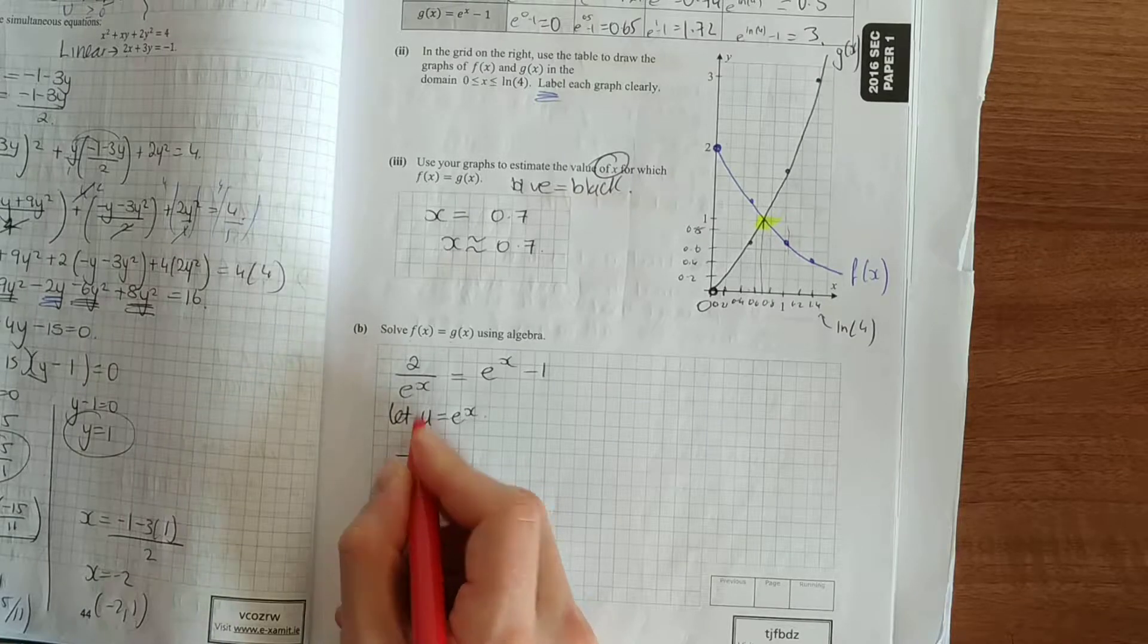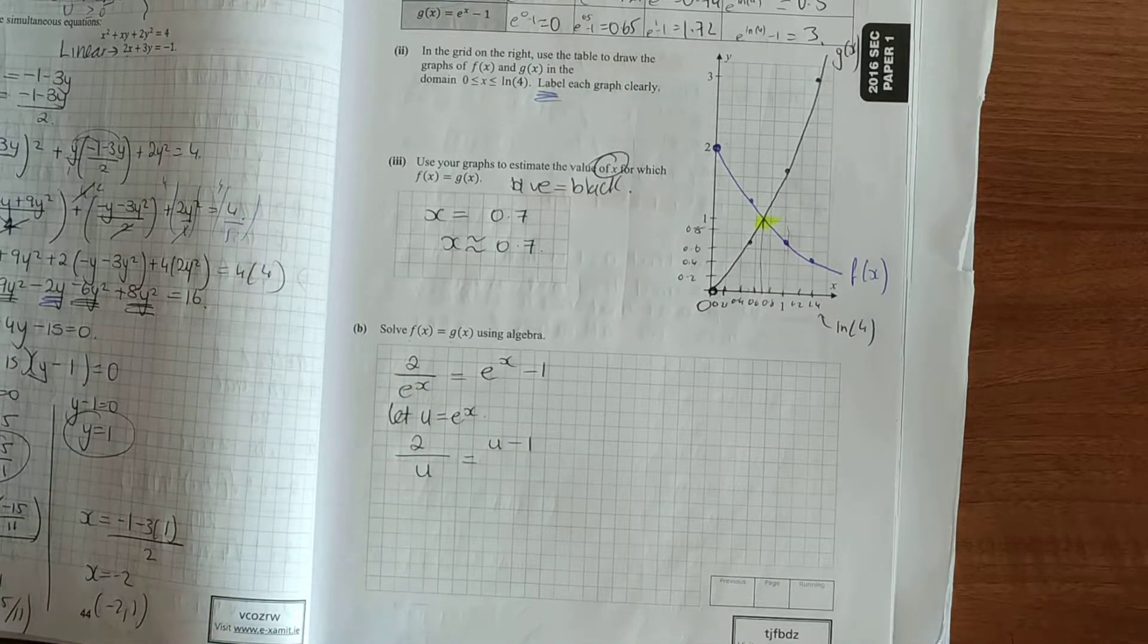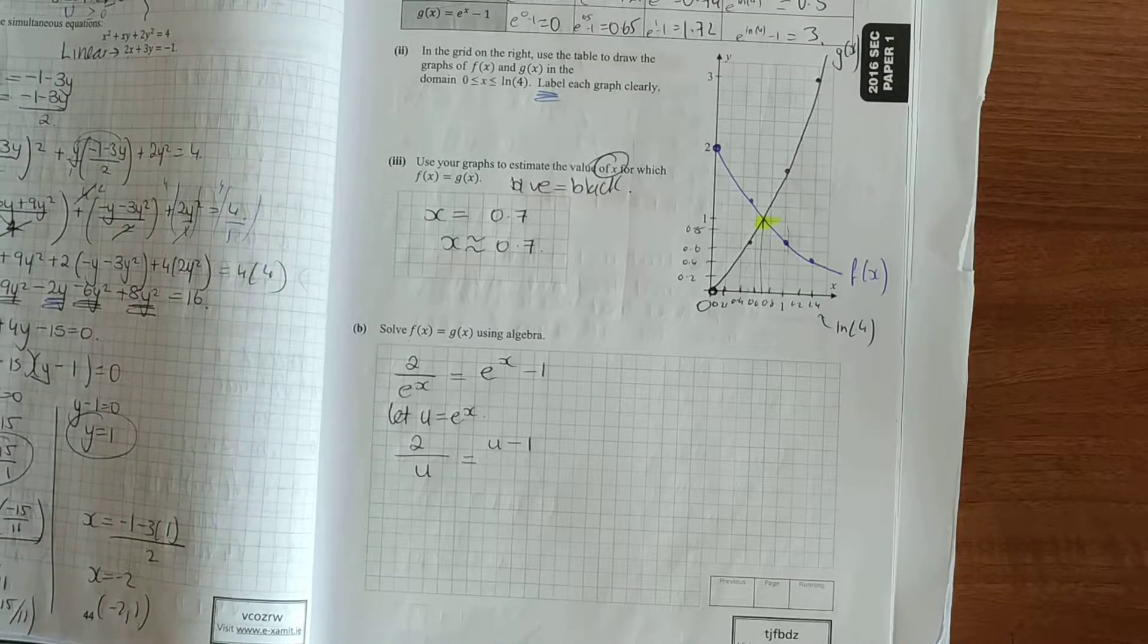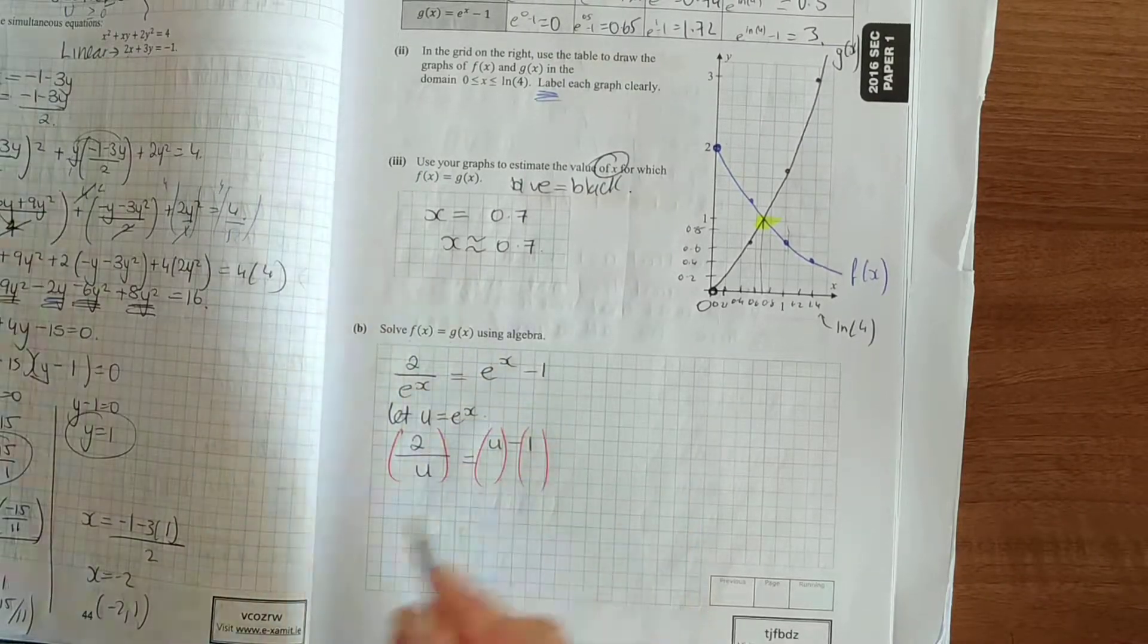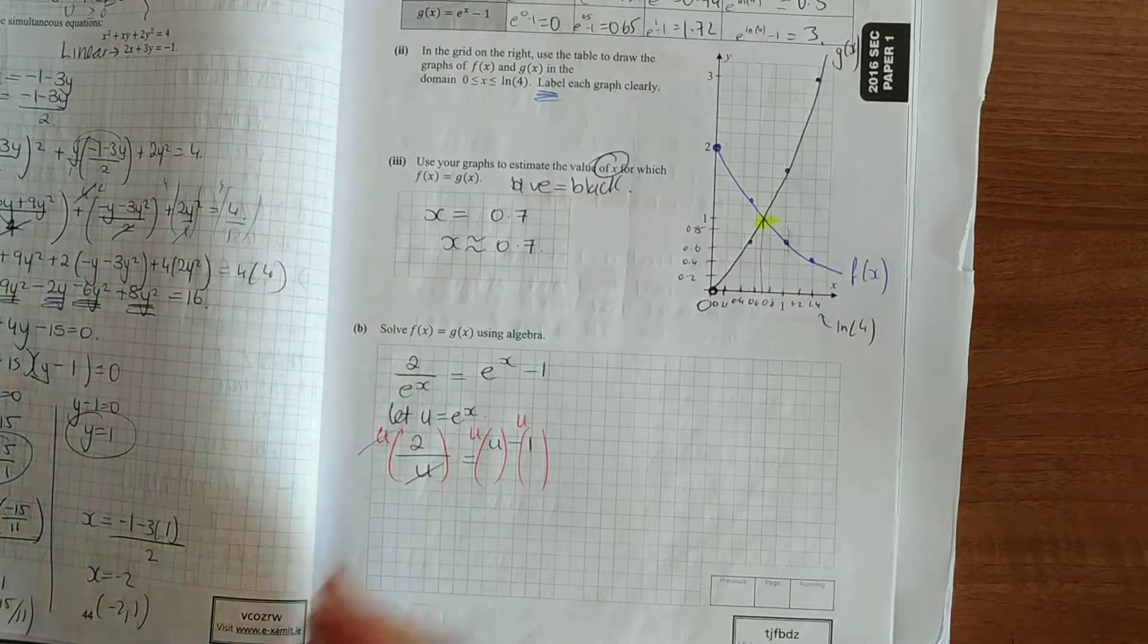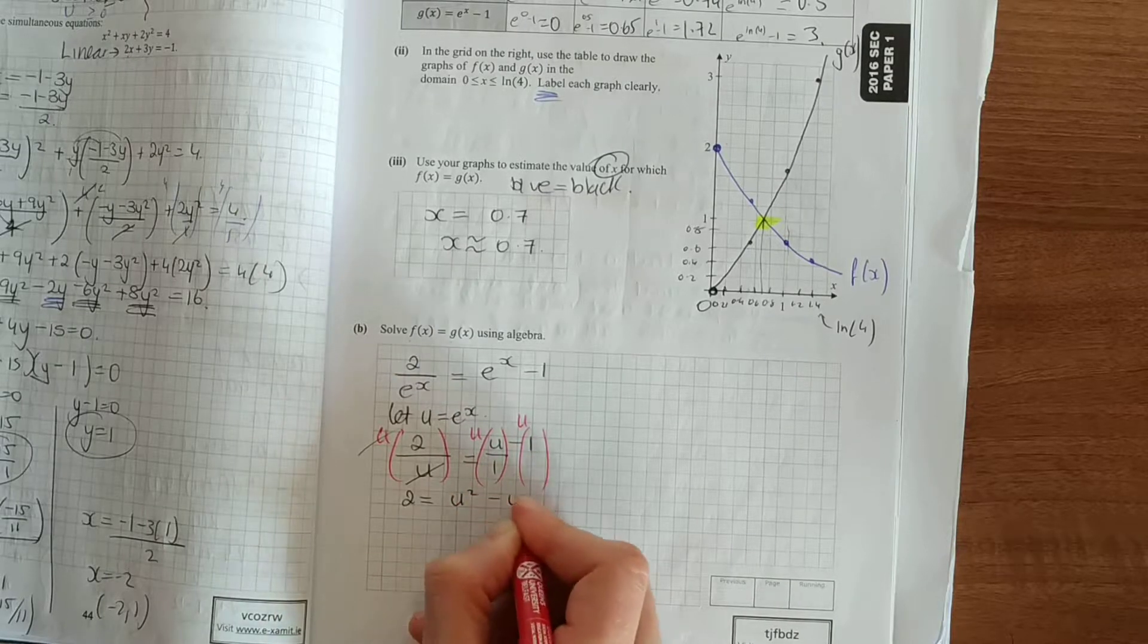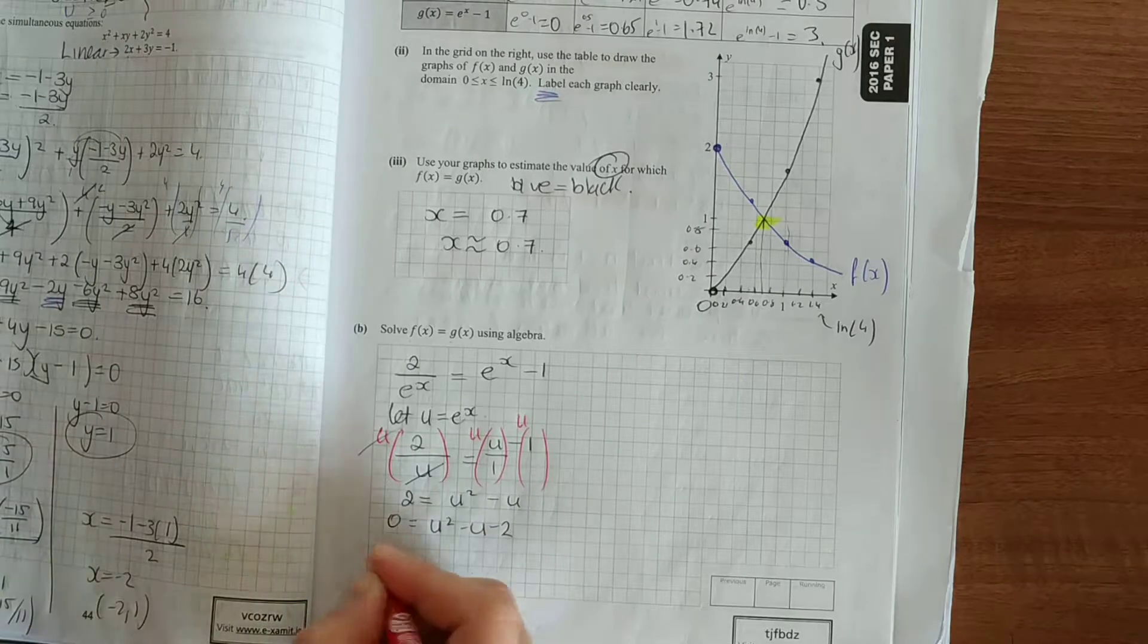So if you let u equal to e to the power of x, this equation then is written as 2 over u equals u minus 1. As we've seen in the previous question, when we've got fractions and when we have an equals, the fraction can disappear. Multiply by what it doesn't have, your common denominator, which is u. So that cancels, you have 2 equals u squared minus u.